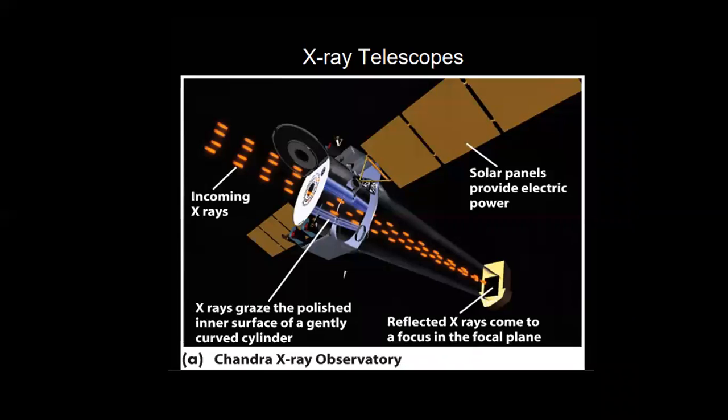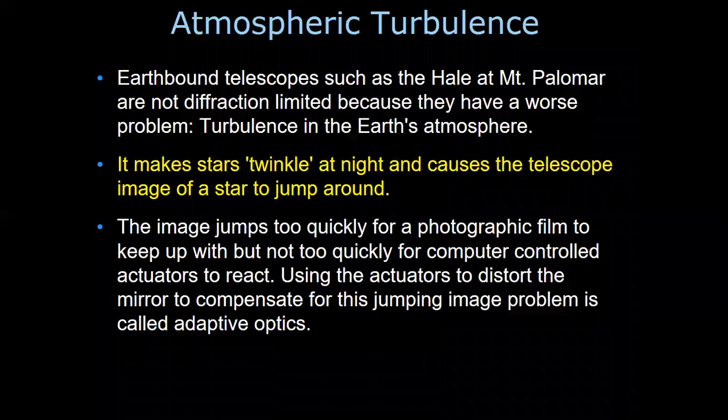It is important to take telescopes into space. Here is another example of an observatory — the Chandra X-ray Observatory, which uses X-rays to collect images from space. It is a very important observatory in modern astronomy.